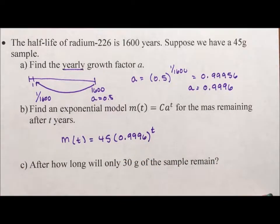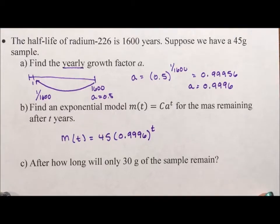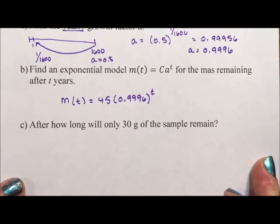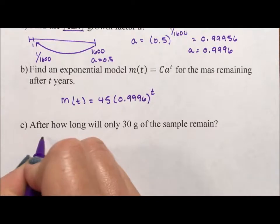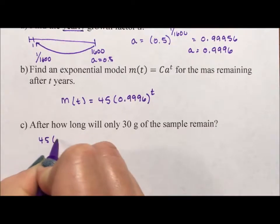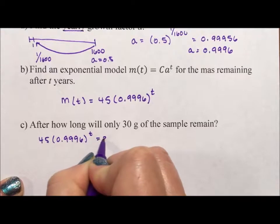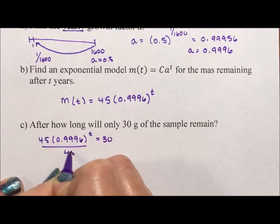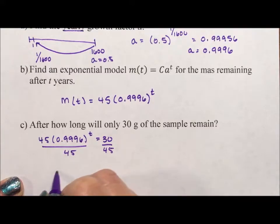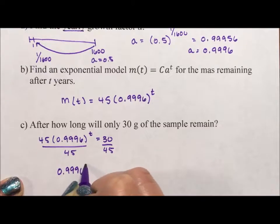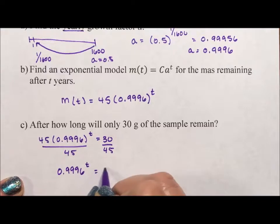After how long will only 30 grams of the sample remain? So how long will 45 times 0.9996 to the t equal 30? We divide by 45, so 0.9996 to the t is equal to two thirds.